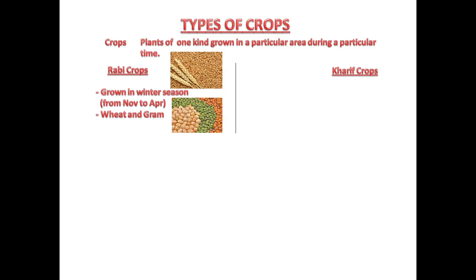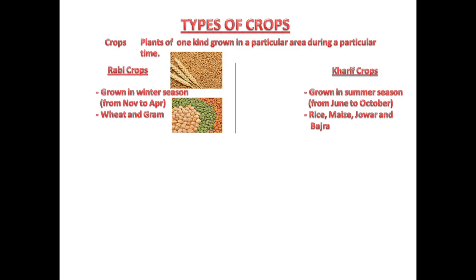Kharif crops are grown in the summer season, from June to October. Examples of Kharif crops are rice, maize, jowar, and bajra. You can see pictures of rice and maize.